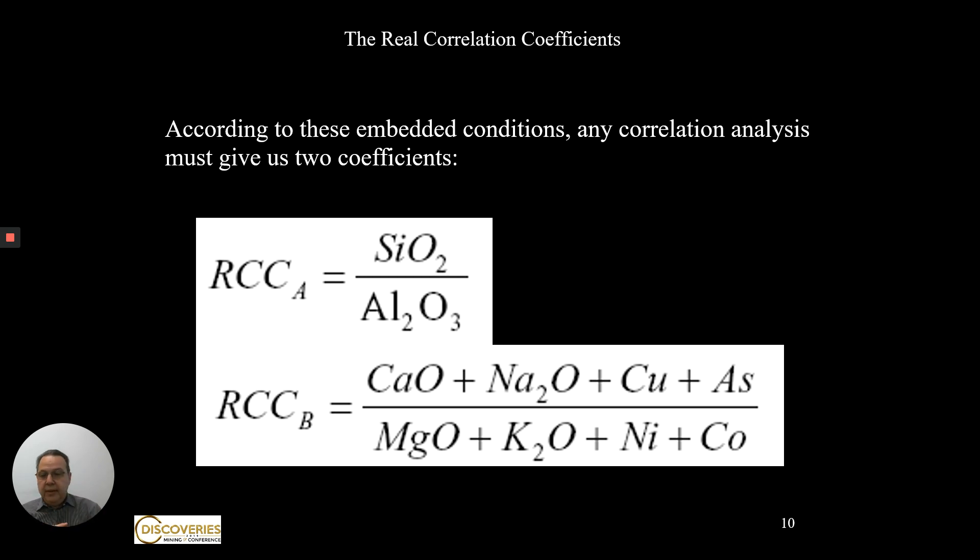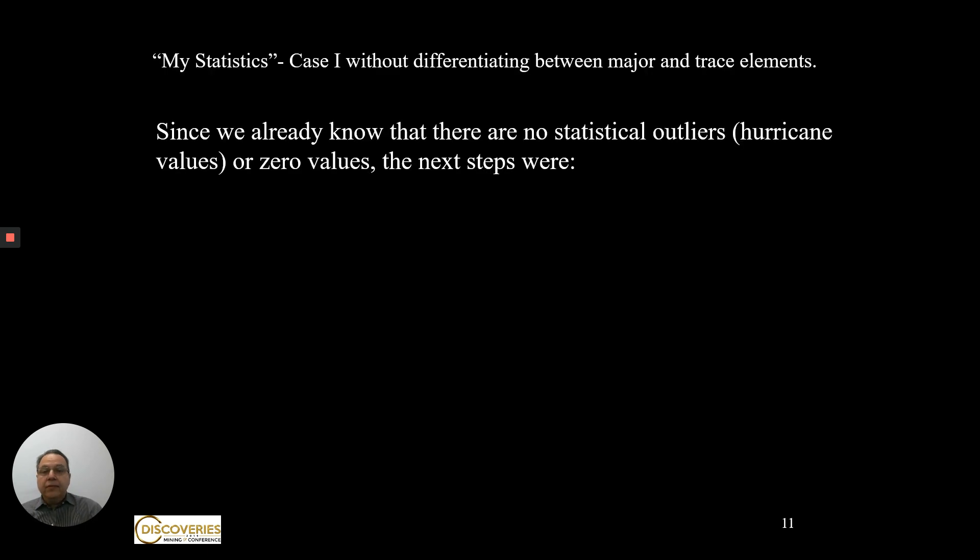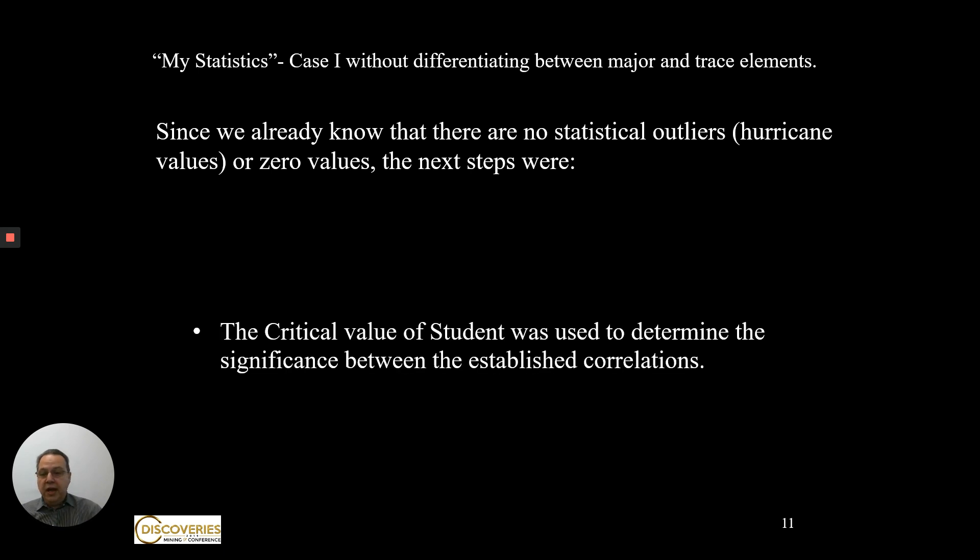I started by processing the whole dataset. Since we don't have serial values or statistical outliers, the process was very simple. We determined the distribution law. If we got a log-normal distribution, we converted it to the logarithmic version. We used Excel to calculate the Pearson correlation, and the critical value of the Student's t was used to determine which of these correlations were significant.